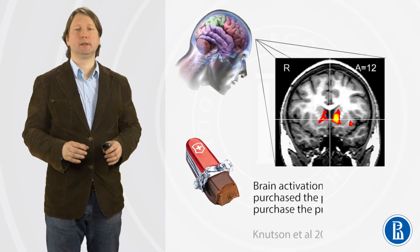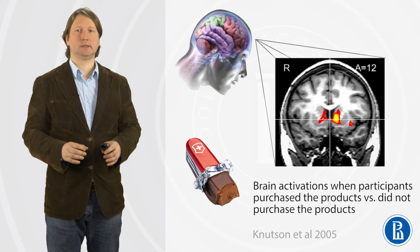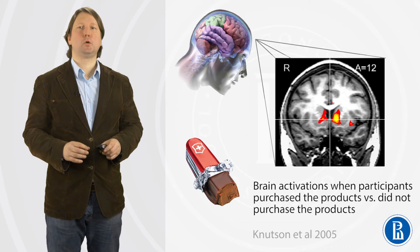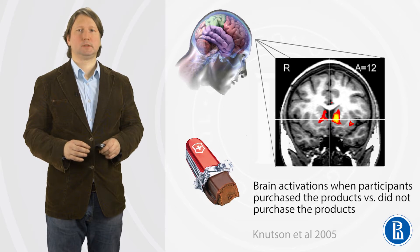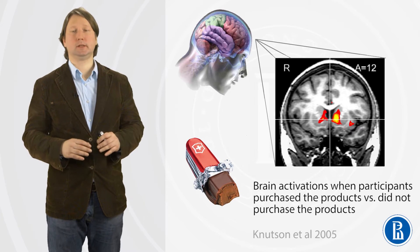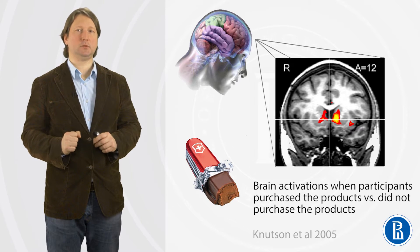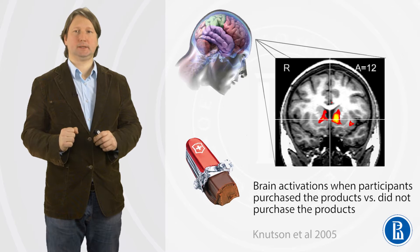As you see here, this is an example from Brian Knudsen's study that will be discussed in the follow-up lectures. We can predict purchasing decisions of the subjects. It's not an ideal prediction, but it's still above chance level. Already now we can predict our decisions by brain activity.